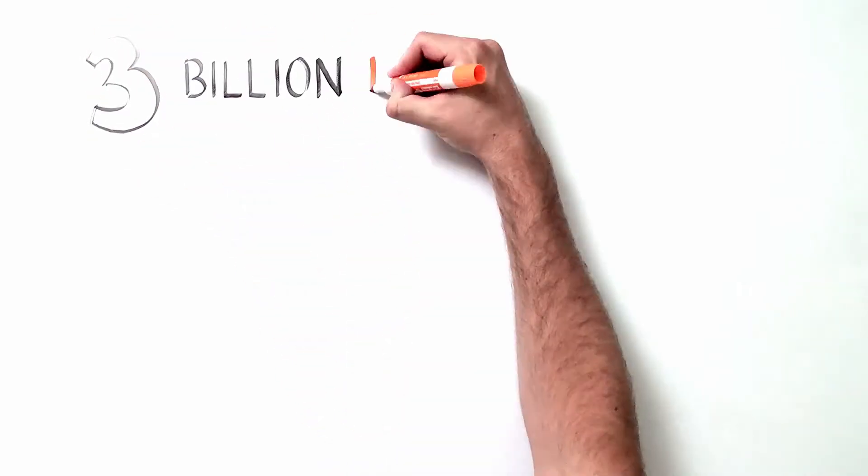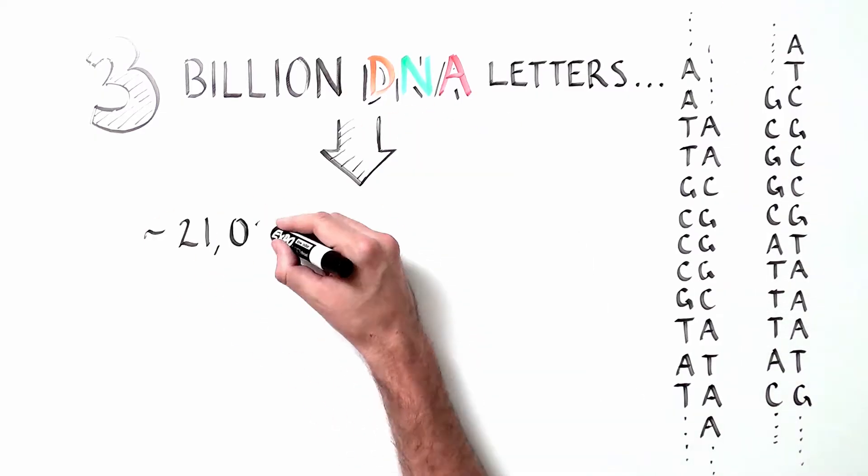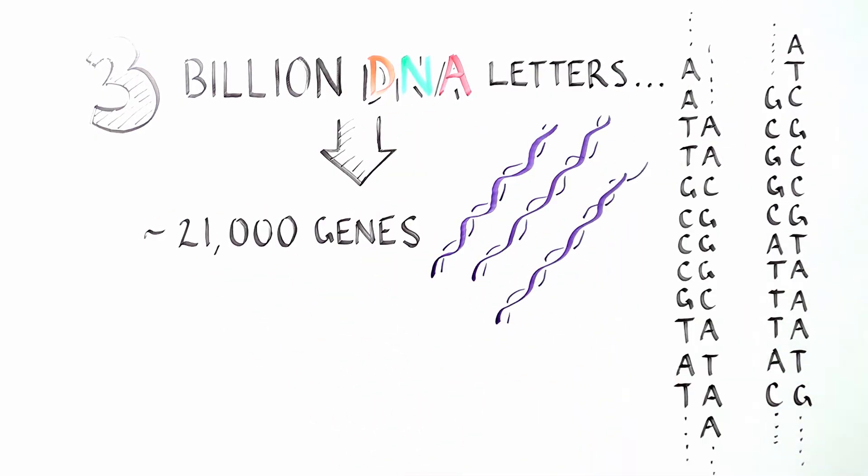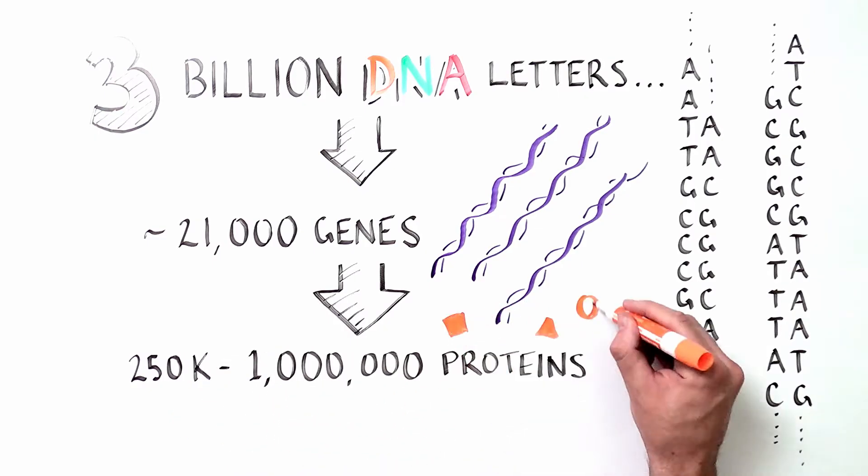The 3 billion DNA letters that make up the human genome encode roughly 21,000 genes. These genes in turn provide instructions for making an estimated 250,000 to 1 million distinct proteins.